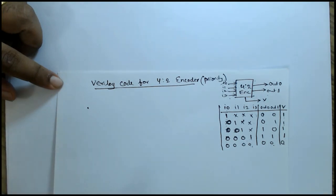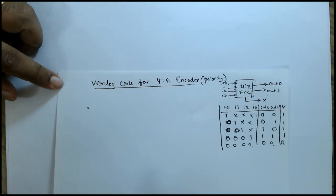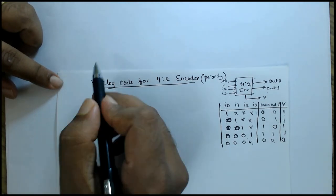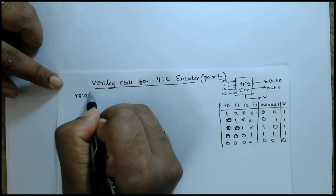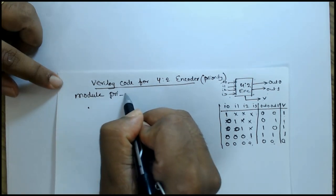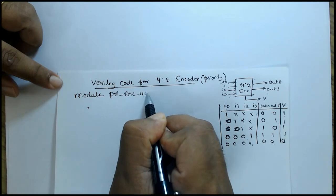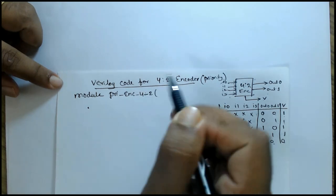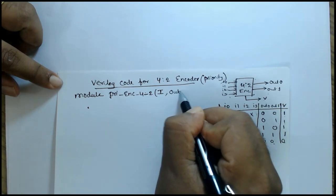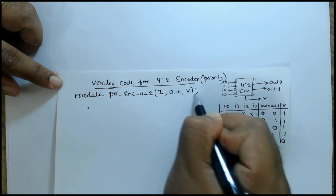Now we'll write the code. Remember, the case statement is like a friend of a programmer as a beginner, because it is just a duplication of the truth table — whatever truth table exists, the same thing I'll bring in case form. Module: priority_encoder_4_2. Input i is 4-bit, out is 2-bit output, and v is a valid output.